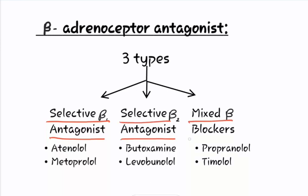The examples of selective beta 1 antagonist are atenolol and metaprolol. The examples of selective beta 2 antagonist are butoxamine and levobunolol. The examples of mixed beta blockers are propranolol and temolol.